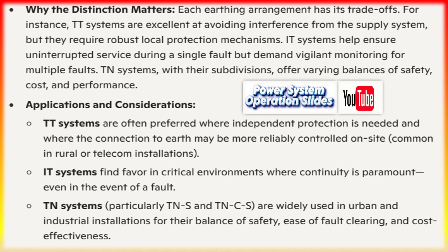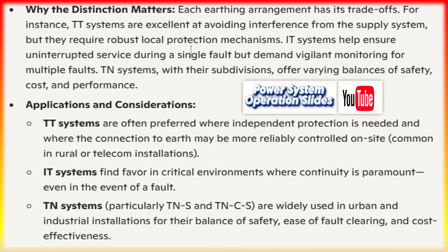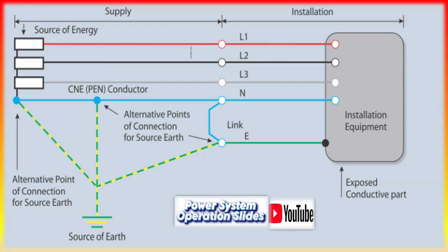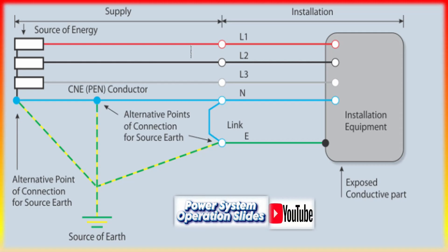TNC (combined) configuration: here, a single conductor known as PEN (protective earth neutral) performs both the functions of neutral and protective earth throughout the distribution network. While it reduces the amount of cabling and can be more economical, using a combined conductor means that a fault in this conductor could compromise both the neutral and the protective earthing function. Some installations may risk inadvertent sharing of fault currents that could lead to safety issues if not rigorously maintained.